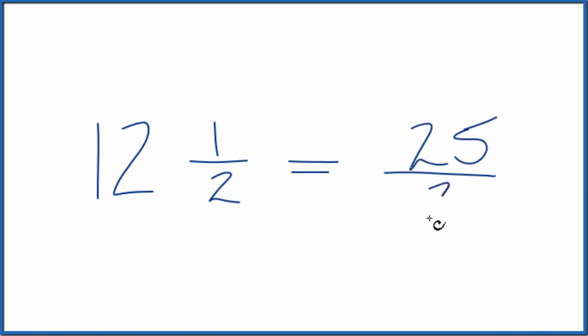And we just bring the denominator across. That's it. The mixed number 12 and one half equals the improper fraction 25 halves, or 25 over 2.